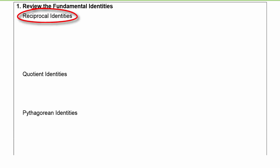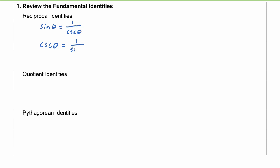Let's start with the reciprocal identities. We know that sine of theta is one over the cosecant of theta, which means that the cosecant of theta is equal to one over the sine of theta. Which means that if I take sine of theta times cosecant of theta, I'm going to get one, because a number times its reciprocal is equal to one.